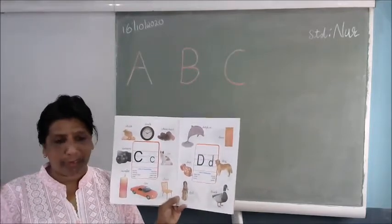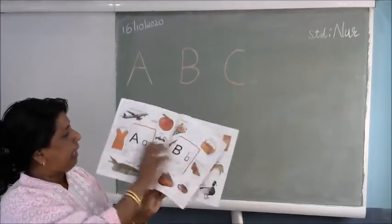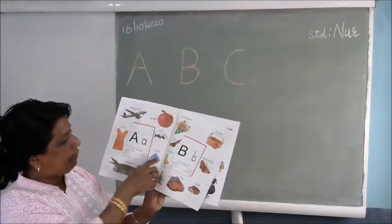Like for A for apple, A for airplane, A for apron, A for ant, A for arrow, A for alligator.